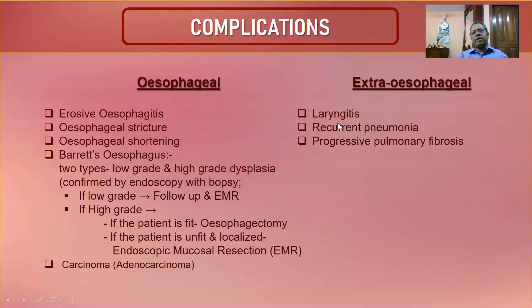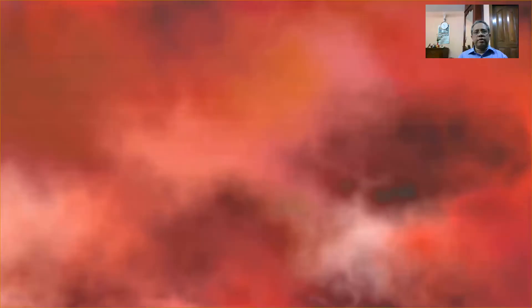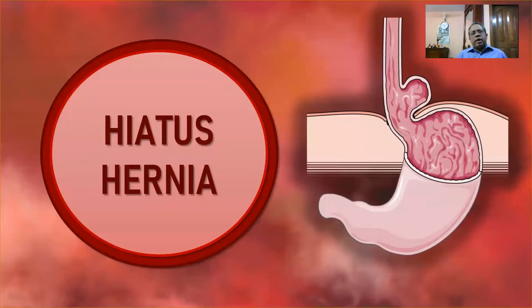Extraesophageal complications include laryngitis, recurrent pneumonia, and progressive pulmonary fibrosis — caused by repeated aspiration of acid contents into the respiratory tract.